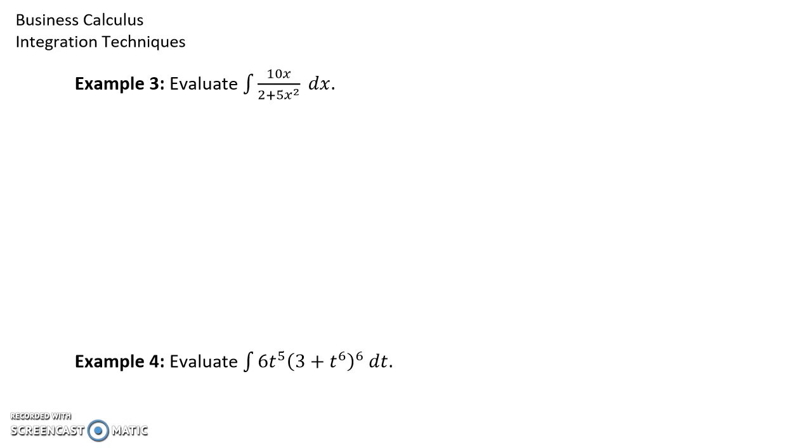So in example 3, we want to consider the same idea. It might be a little bit more difficult to catch on to what the interior function is in this case, but we could consider this problem to be a variation of 1 over u, so what we have is the interior function in the denominator here, so we'll let that equal u.